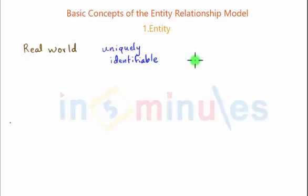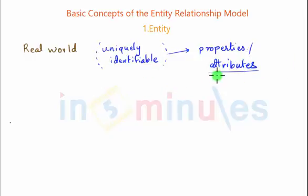An entity is any real world object that can be uniquely identifiable. When I say uniquely identifiable, what I mean by this term is that it has certain properties which are called as attributes in the terminology of database management systems which can uniquely identify it or distinguish it from other objects or entities.